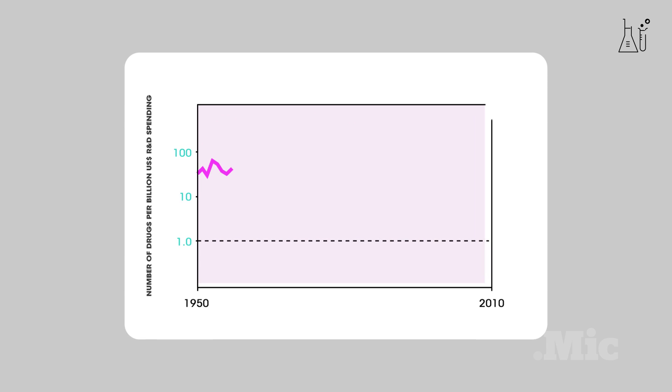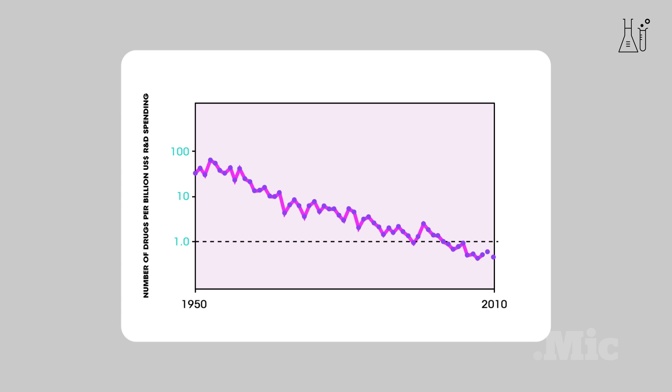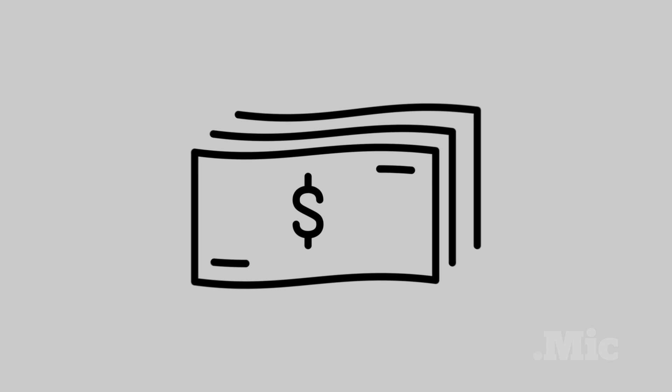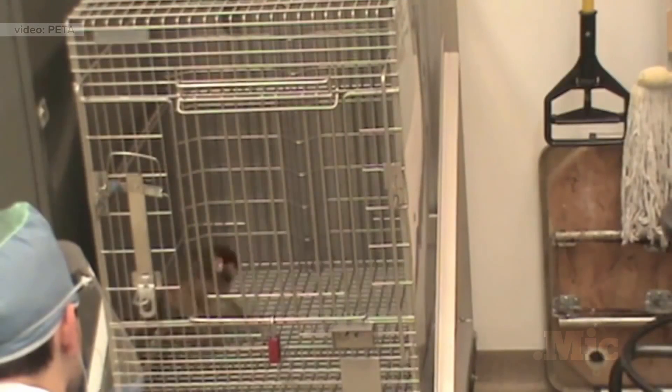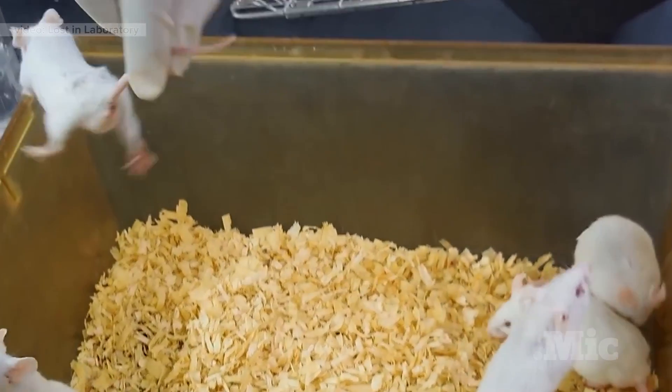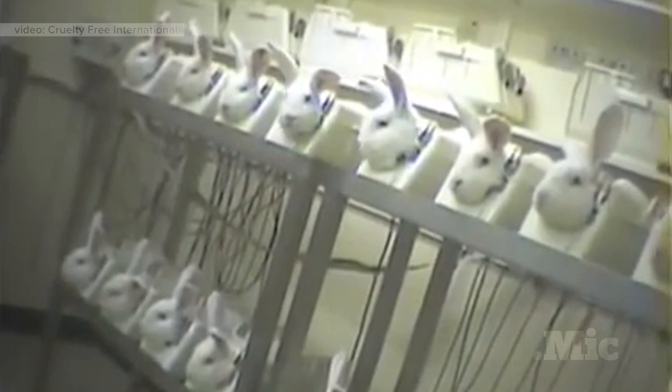Since 1950, the number of approved drugs in the U.S. has been decreasing, even though we're spending more money than ever on pharmaceuticals. And before drugs can be given to any actual human beings in a clinical trial, they have to go through a lengthy process of lab and animal testing.